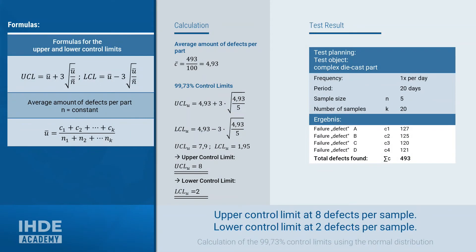With the values for u bar and the average sample size n bar, the following values are calculated using the formulas for the control limits. The upper control limit is 7.9, rounded 8, and the lower control limit is 1.95, rounded 2.